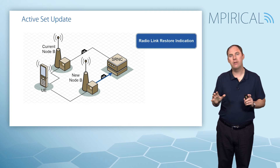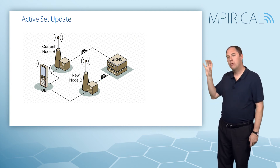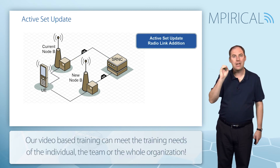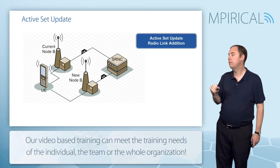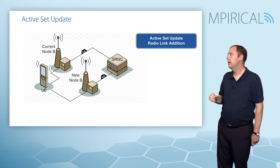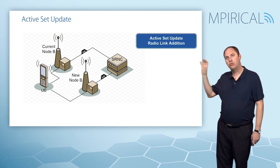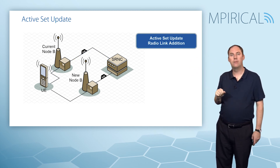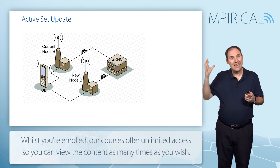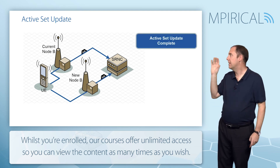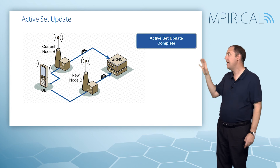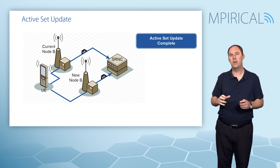The mobile is unaware at this point. We're now ready to tell the mobile by sending an active set update message down to it via the existing cell, saying radio link addition — add this radio link to the active set — along with information about the scrambling code of the new cell. Once done, we configure the handset to listen to both cells. Because the new cell has already been configured, it will hear the active set update complete arriving at the RNC.